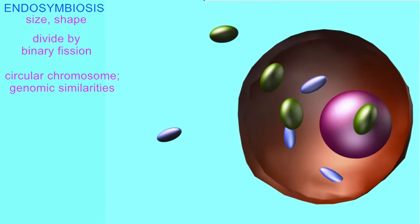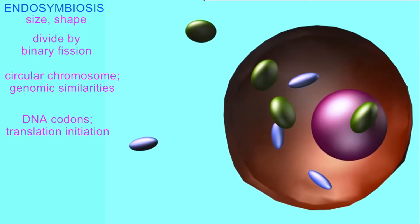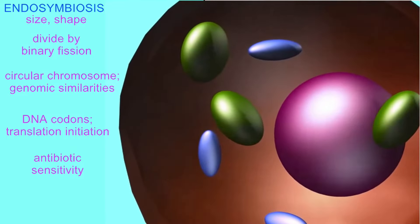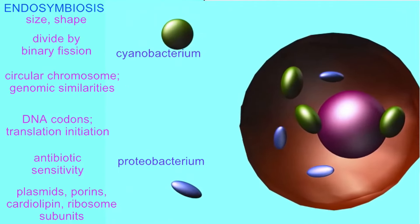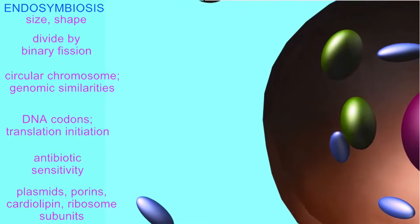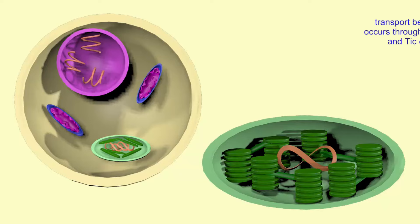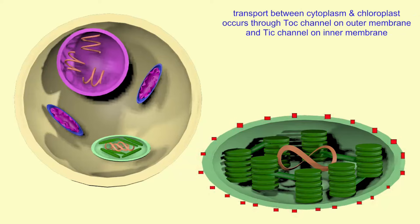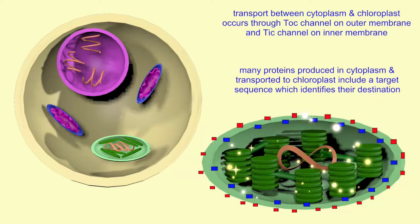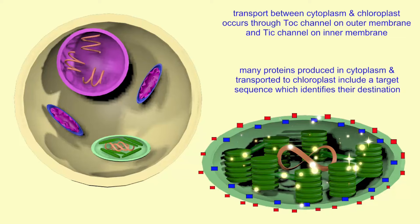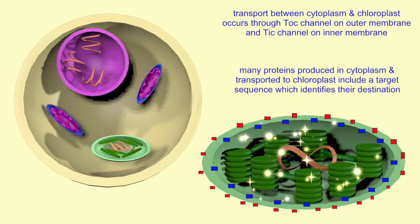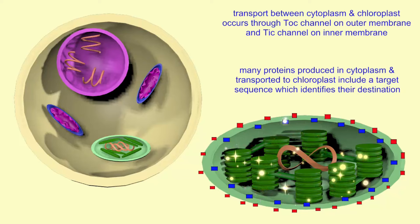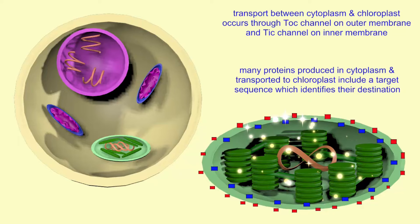Like bacteria, the genes in chloroplasts are organized into functional units known as operons, which does not exist in the nucleus. The RNA polymerase, ribosomes, form of chromosome replication, and membrane lipids found in chloroplasts are also more similar to their cyanobacterial ancestors. Transport between the cytoplasm and the chloroplast — such as of the proteins encoded by the nucleus but required by the chloroplast — occurs through TOC channels in the outer chloroplast membrane and TIC channels in the inner membrane.